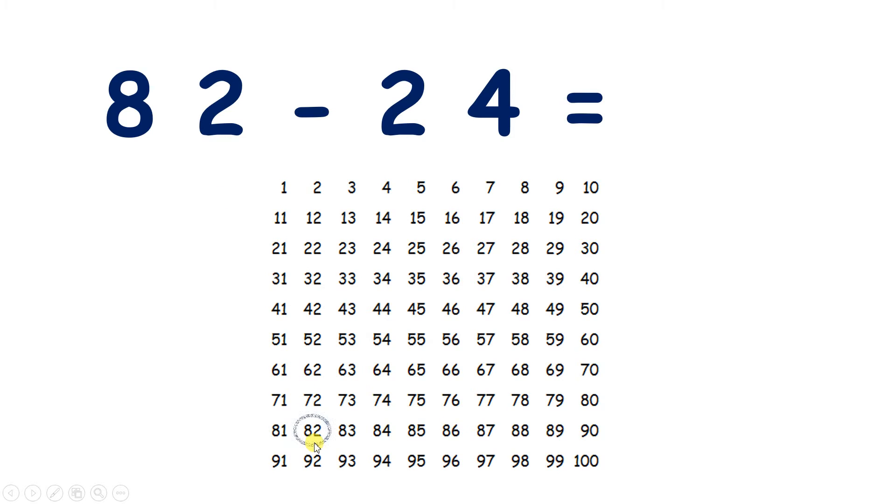So we start on 82. We're subtracting two tens, so we can move one, two places up. And now we need to subtract four units, so we move one, two, three, four places left. So 82 subtract 24 is 58.